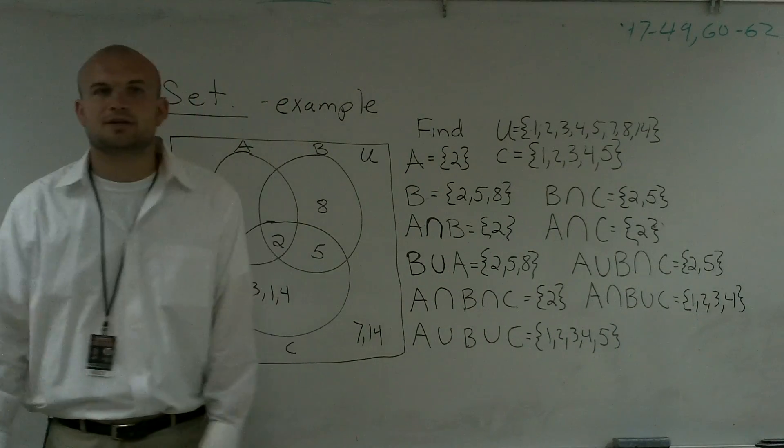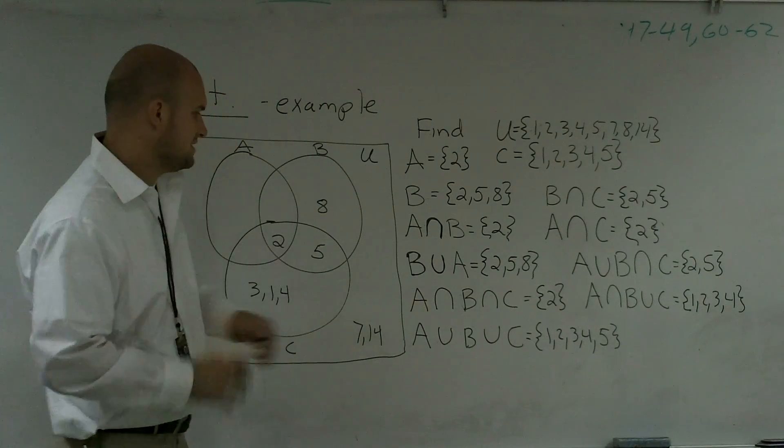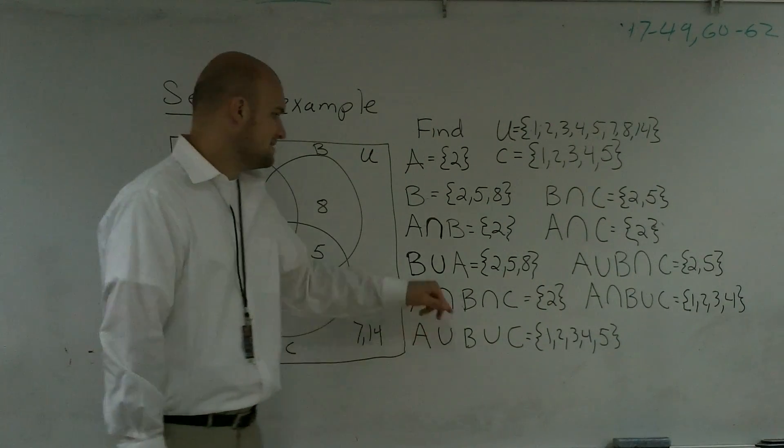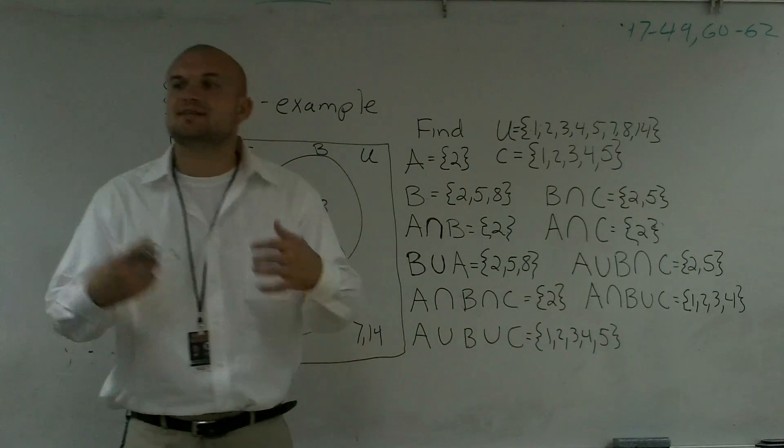Alright, now what we're going to do is I'm going to do a set notation when we have three different circles. So what this says is A intersect B intersect C. So what that means is what does A have in common with B that also has in common with C?